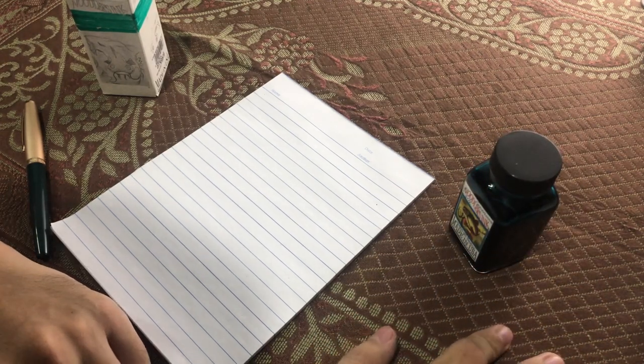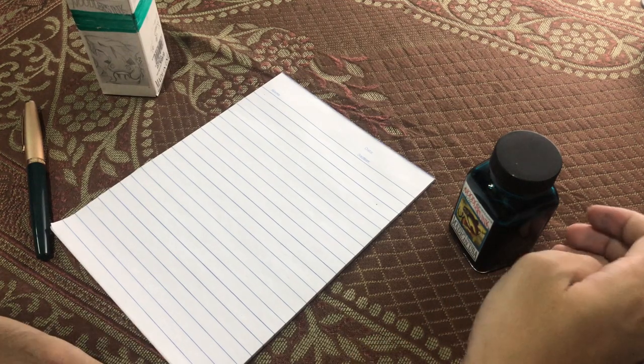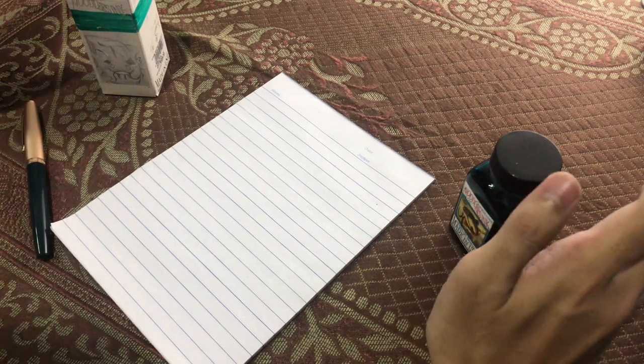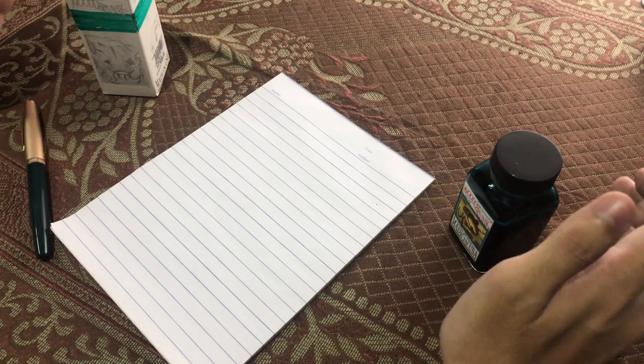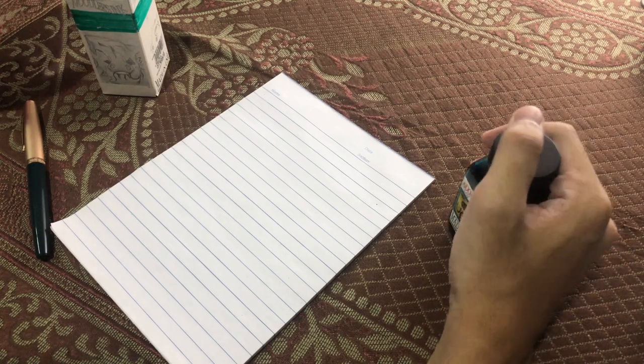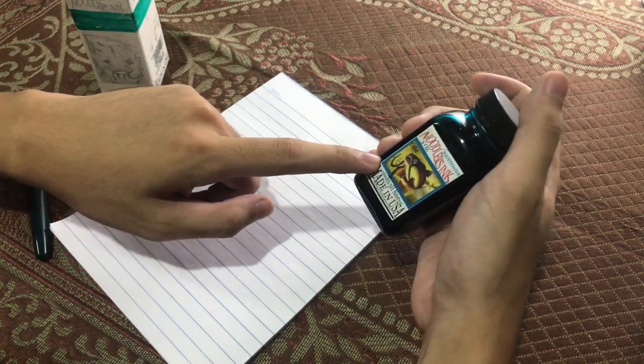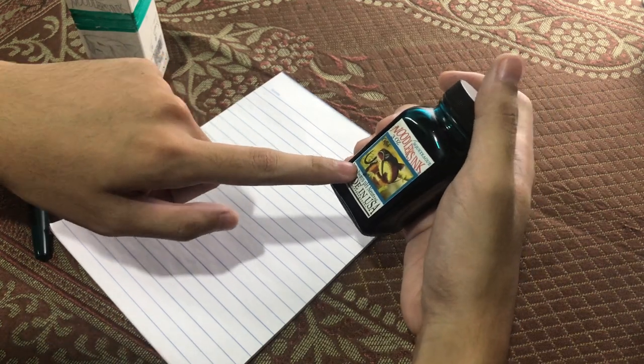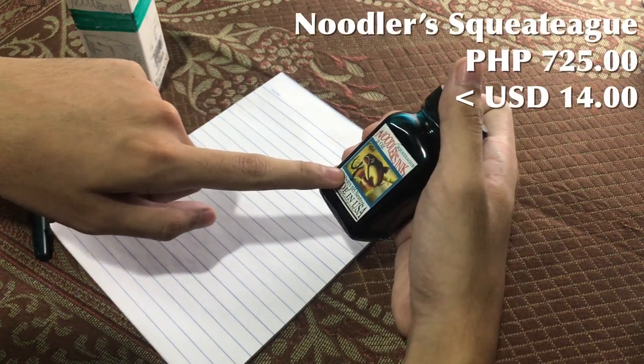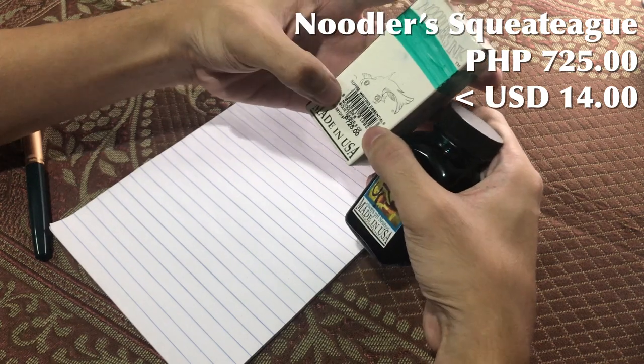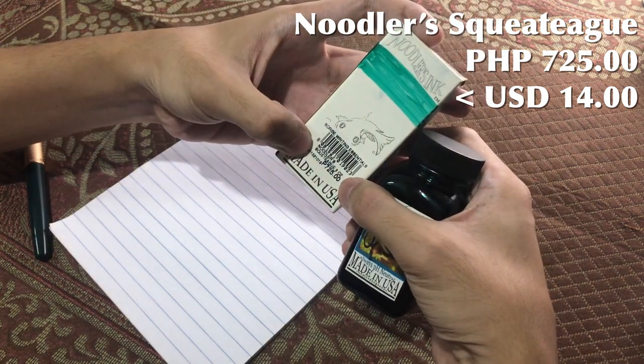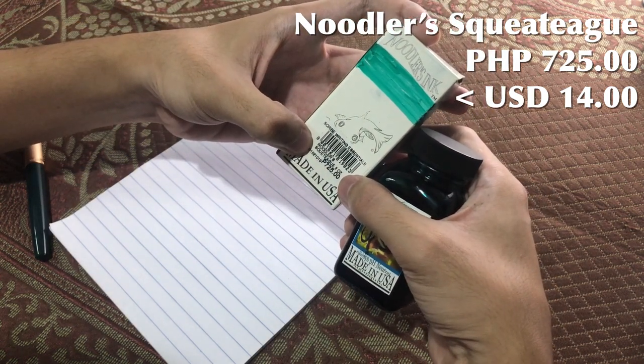Before I start my writing sample, I'll familiarize everyone first with the materials we're going to use. First, right here again, is the Noodler's Squeteague that I bought for 725 pesos from Scribe in Makati. I'm not sure if the price is still the same as of this filming.